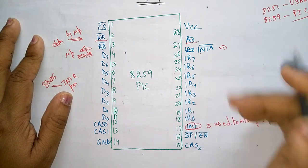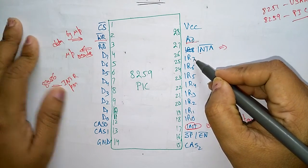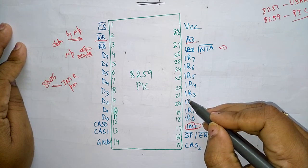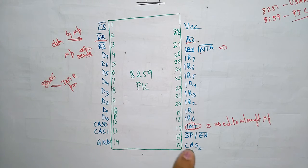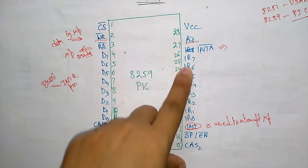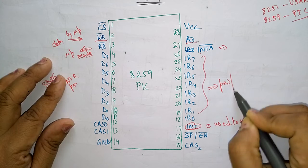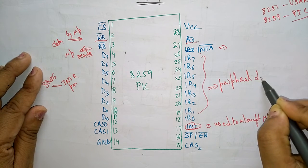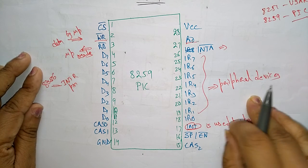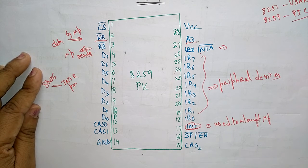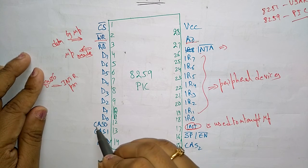IR0 to IR7: these interrupt requests are executed by peripheral devices. These requests are given by the peripheral devices. When one of these signals is asserted, coming to the cascading: CS0, CS1, CS2.